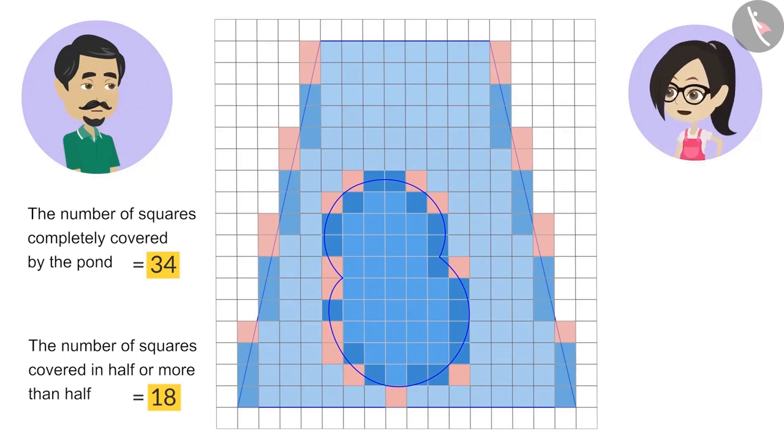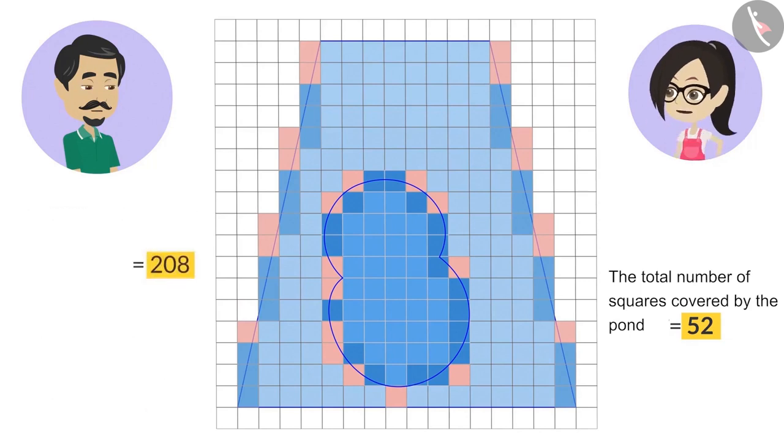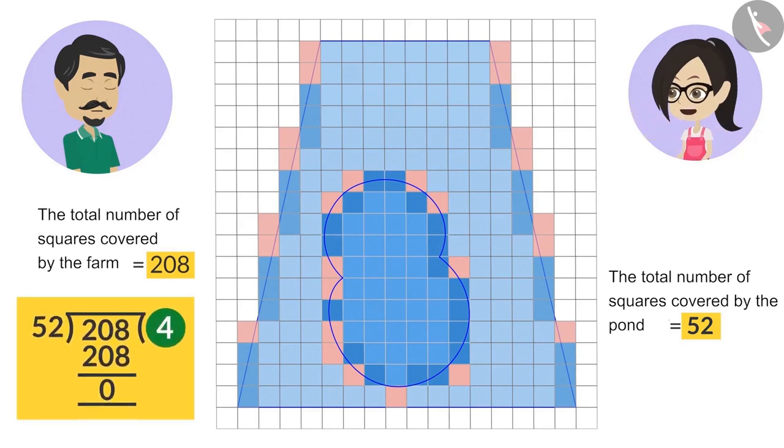This shows that this pond has covered 34 plus 18 equal to 52 squares, which is one-fourth of the squares that are covered by the farm. That means that the engineer has measured it correctly. This pond covers exactly one-fourth of our farm.